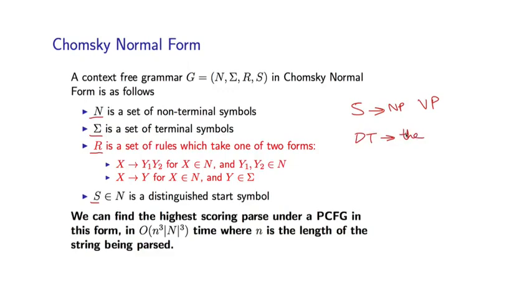We saw that given a PCFG in Chomsky Normal form, we can use dynamic programming to find the highest probability parse in order cubic time in the length of the sentence, and cubic time in the number of non-terminals in the grammar.